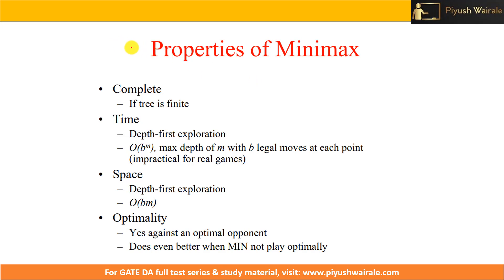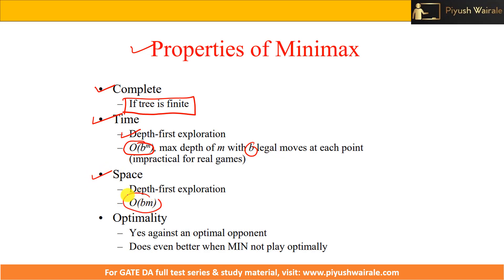What are the properties of minimax algorithm? It is complete, but only when the tree is finite. Time complexity is O(b^m), where m is maximum depth and b is the number of legal moves at each point. Space complexity is O(b × m). It is optimal against an optimal opponent, and does even better when the opponent does not play optimally.